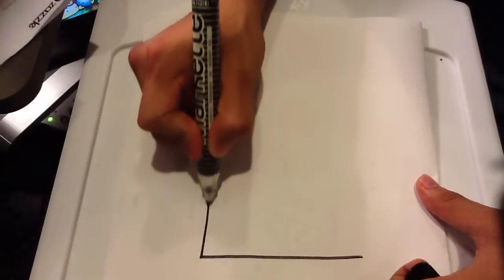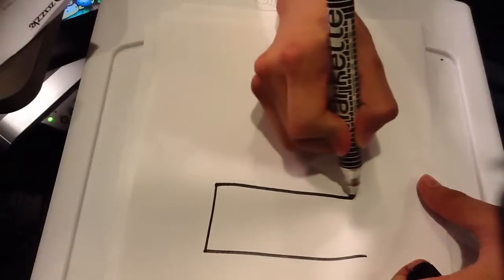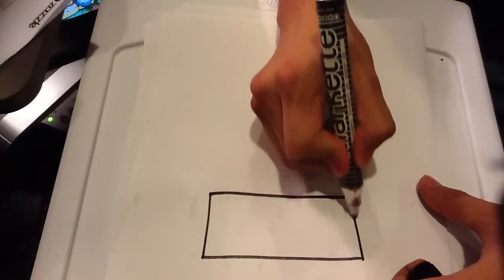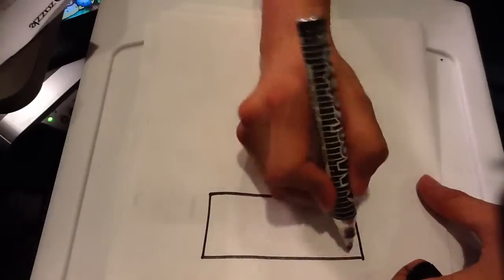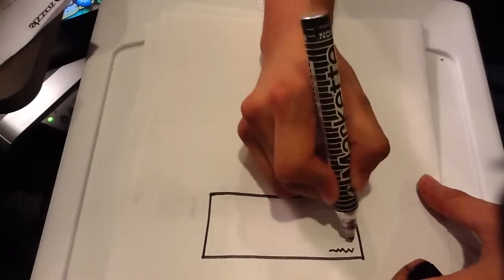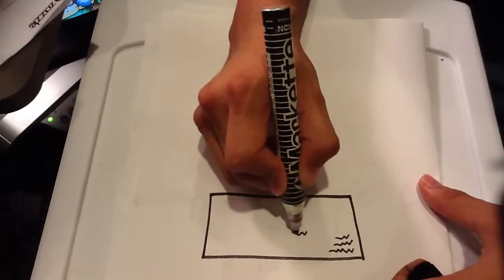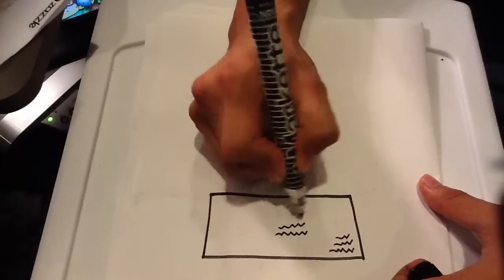Basically the front, draw a rectangle, and honestly that might be it. You can draw squiggly lines to make it seem like that's the return address and the address.